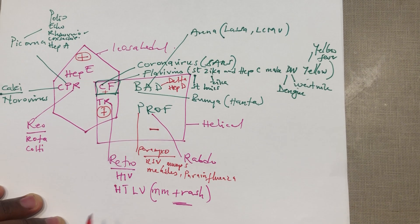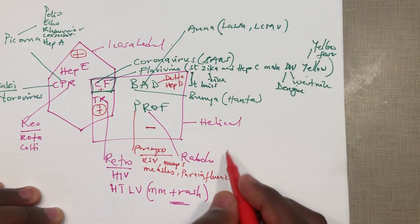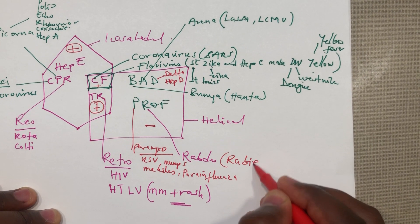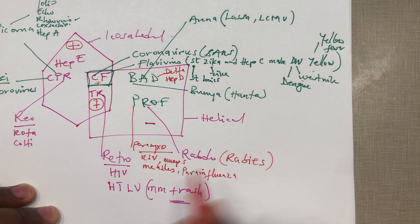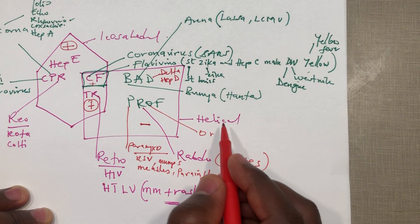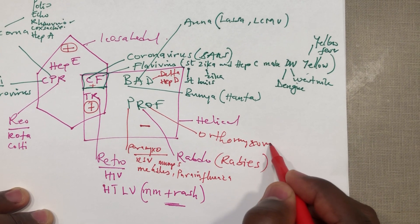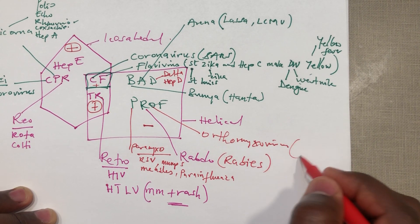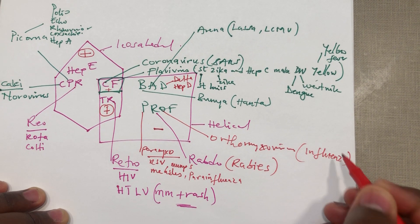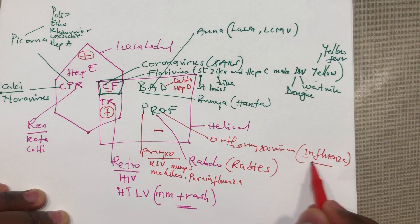The next one is the rhabdovirus. Rhabdo, the name sounds like rabies, so rhabdo is rabies virus. The next one is the orthomyxovirus and the only one there is the influenza. You want to take this influenza virus very seriously, you can get more information from it in the First Aid, its behavior.